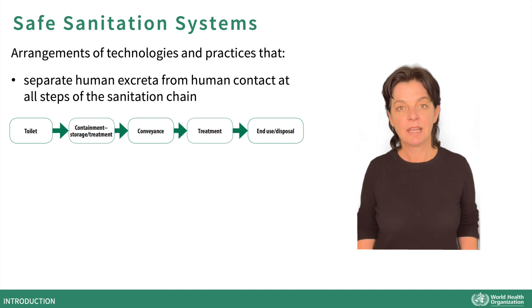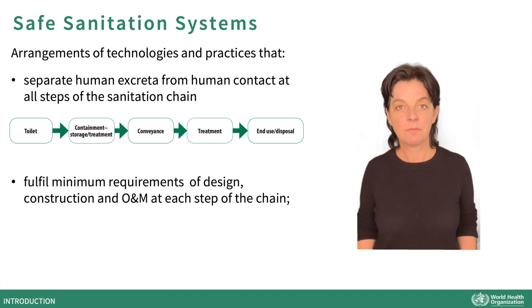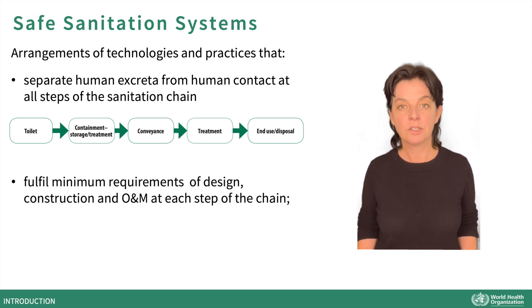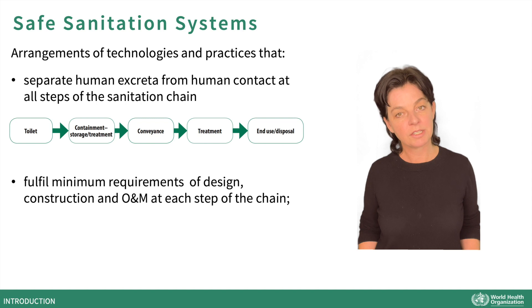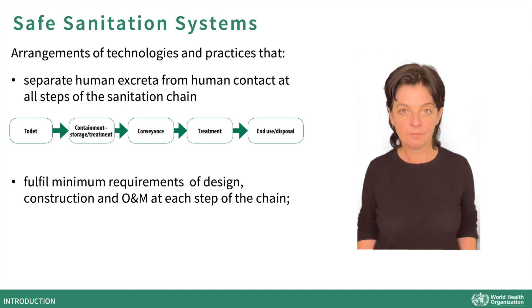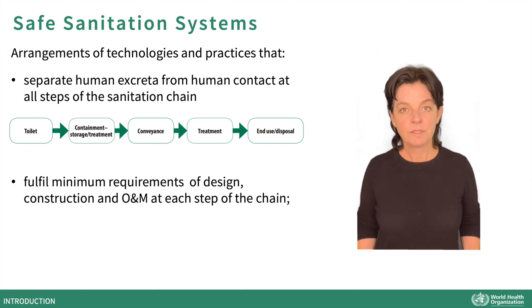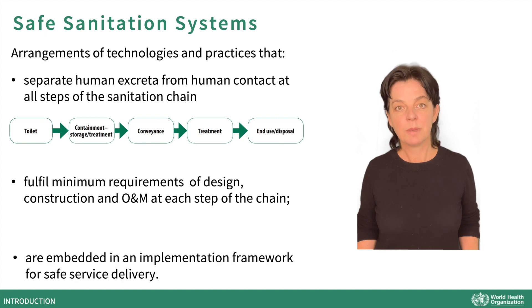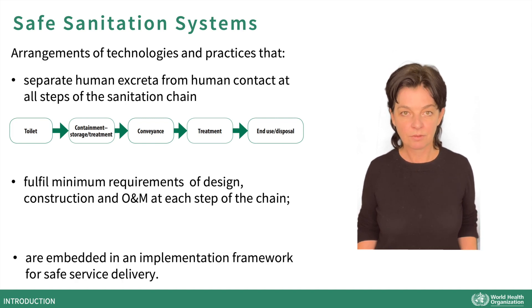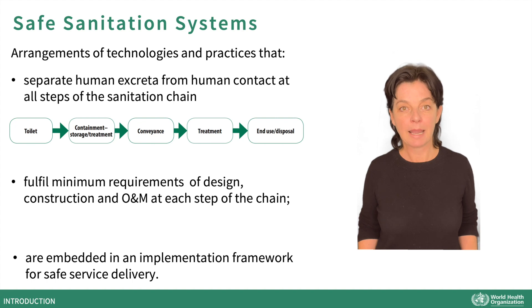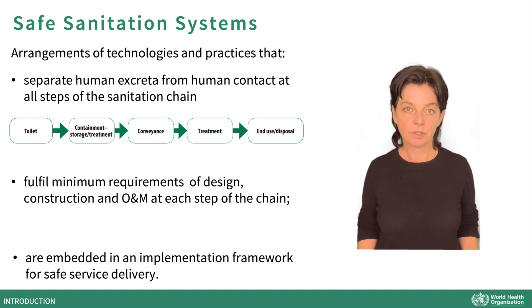To be safe, a sanitation system must fulfill minimum requirements of design, construction, operation and maintenance at each step of the chain. Also, a safe sanitation system is embedded in an implementation framework for safe service delivery that ensures effective planning, delivery, maintenance, regulation and monitoring.